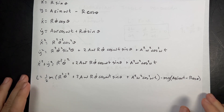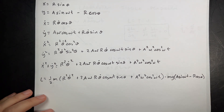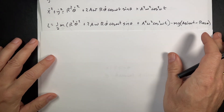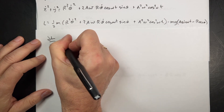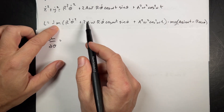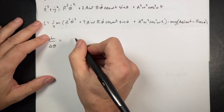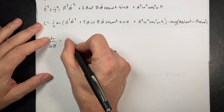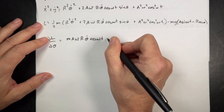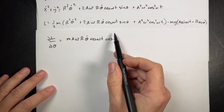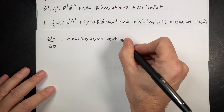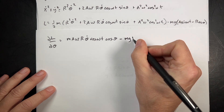Now I can apply the Euler-Lagrange equation. Taking the partial of L with respect to theta: looking for terms with theta, I find the cross term gives m a omega r theta-dot cosine omega t cosine theta. And from the potential term, minus mg times negative r cosine theta gives plus mg r cosine theta, whose derivative with respect to theta is minus mg r sine theta.